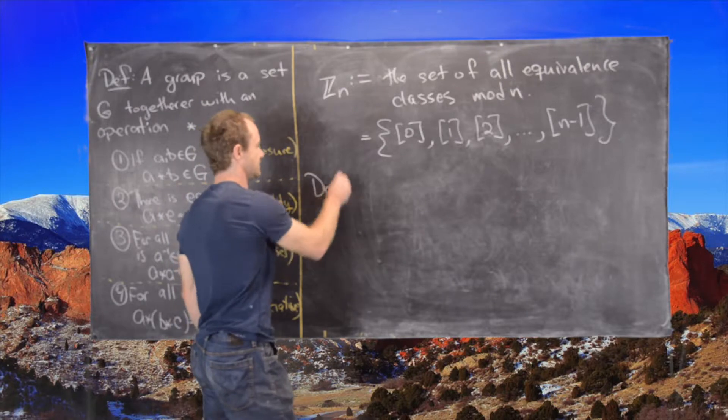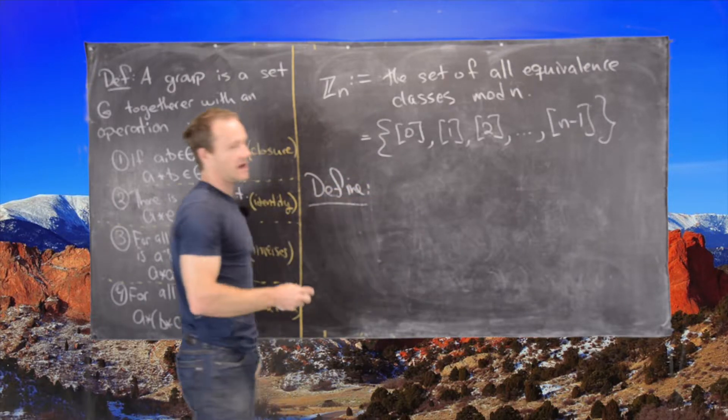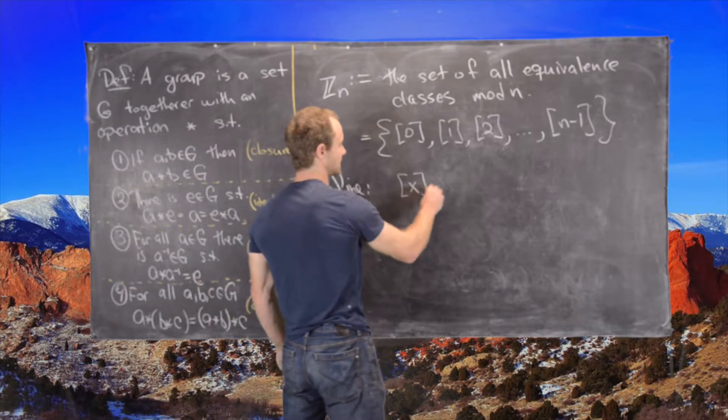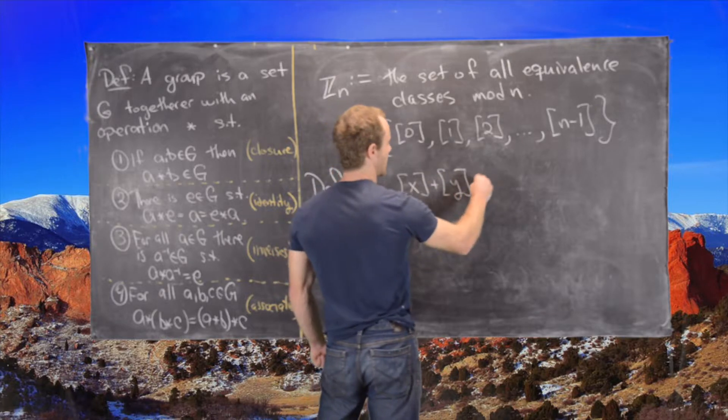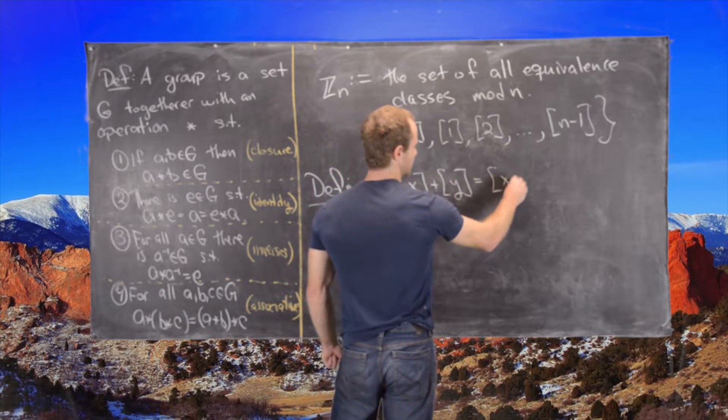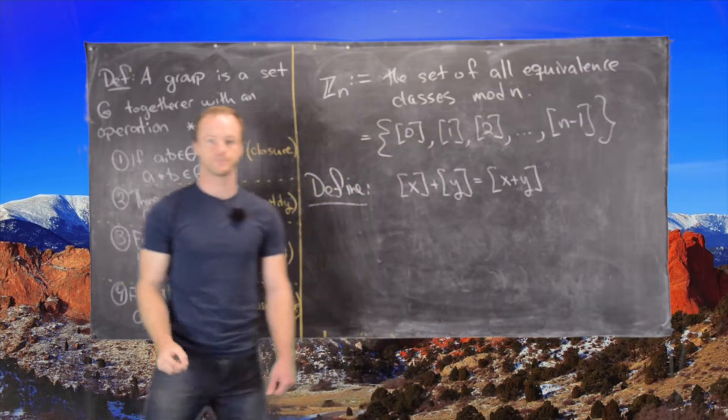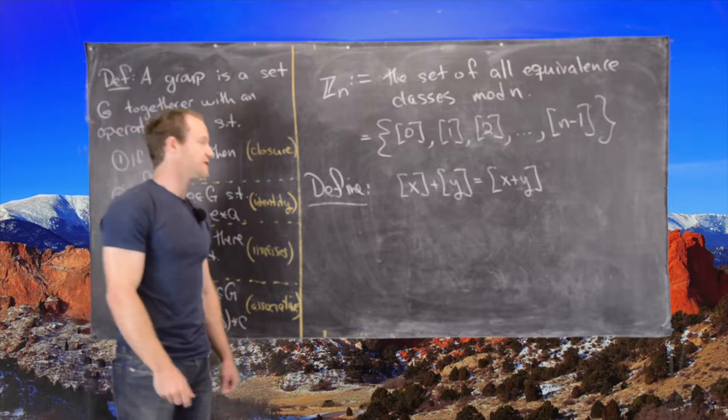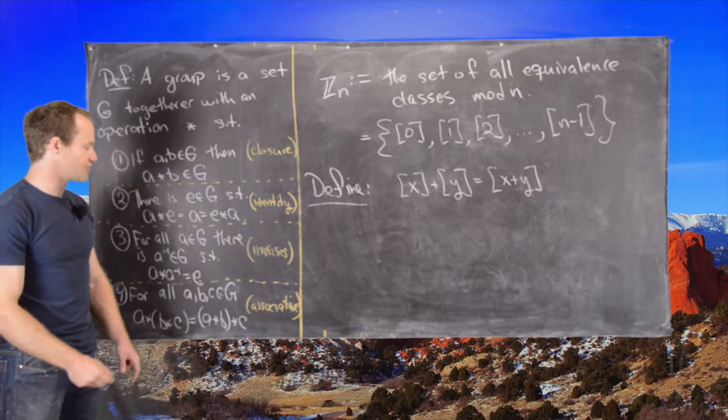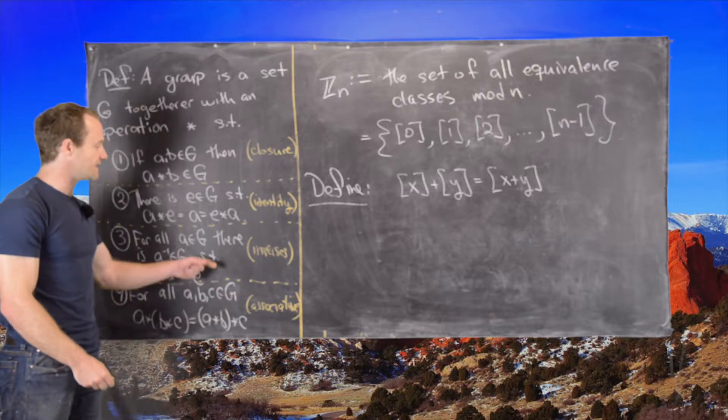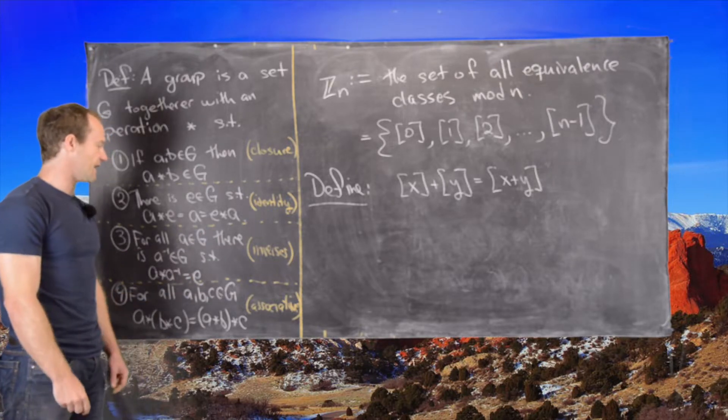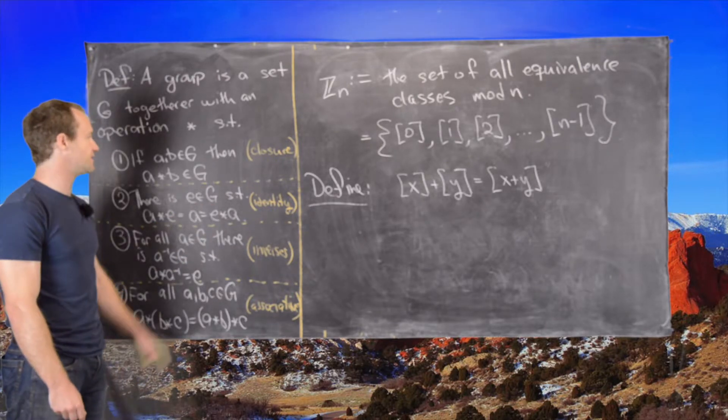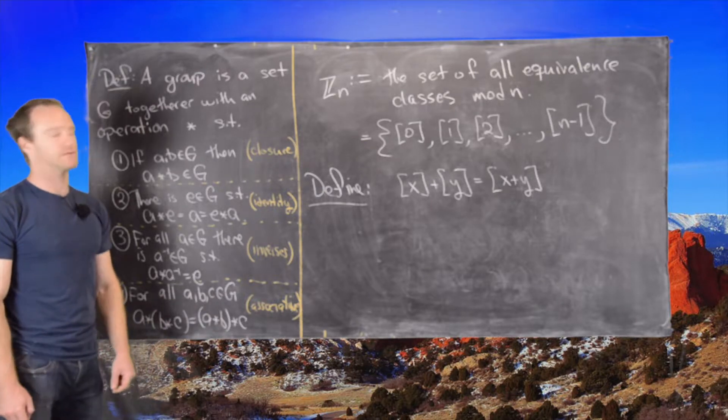And now we can define an addition on this set as follows. We could define the equivalence class of X plus the equivalence class of Y equals the equivalence class of X plus Y. So I'll leave it to you to prove that that's a well-defined operation and that it's associative. But it's not too hard to see that in this setup we have inverses for everything, we have an identity which would be the equivalence class of zero, and it's closed and so on.